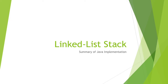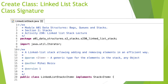The class signature is similar to what we had before. We declare a public class LinkedListStack that is generic, with the generic type Item that can be any object, and it implements the Stack interface for the same generic type Item.